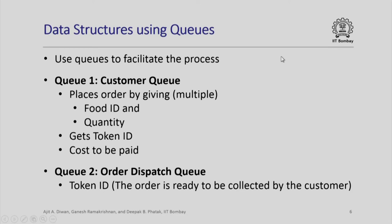We will have to use queues. The first queue, which is very obvious, is a queue for customers. As we already observed, a customer comes in a queue and when his or her turn comes, places an order by giving multiple food ids and quantities. At the end, the customer gets the token id and cost to be paid, and has presumably paid the cost.